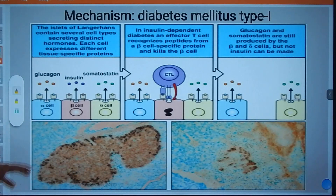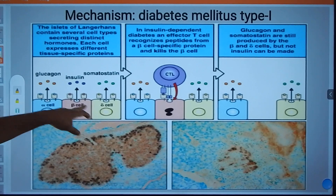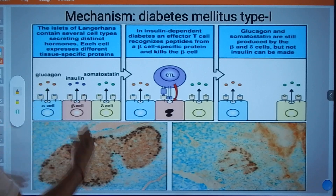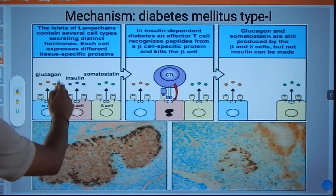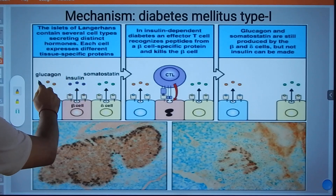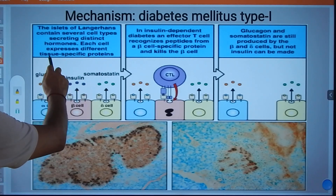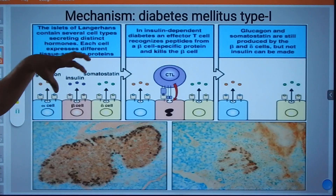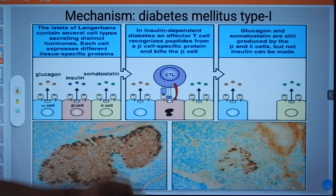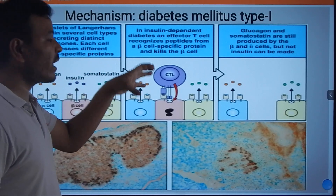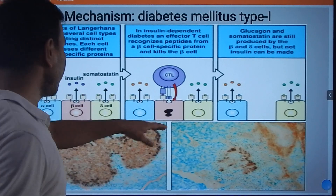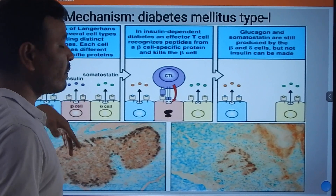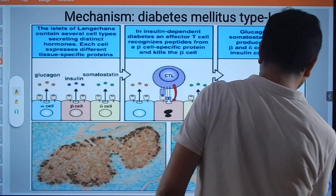Let's look at how this occurs. These are the beta cells. There are different cell types — alpha, beta, and gamma. Beta cells are responsible for insulin, while alpha cells secrete glucagon and gamma cells secrete somatostatin. The islets of Langerhans contain several types of cells, each expressing different tissue-specific proteins. Since this is a T-cell mediated disease, T-cells recognize and attack the beta cells, binding to receptors and destroying them, resulting in no insulin production.